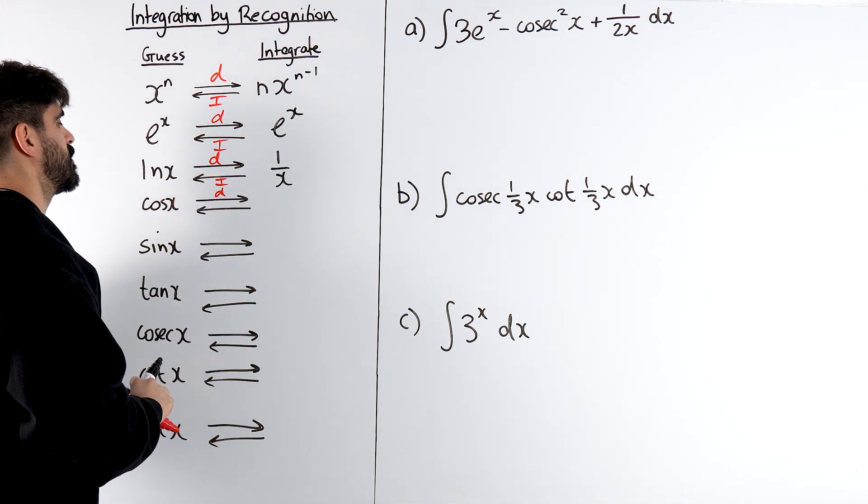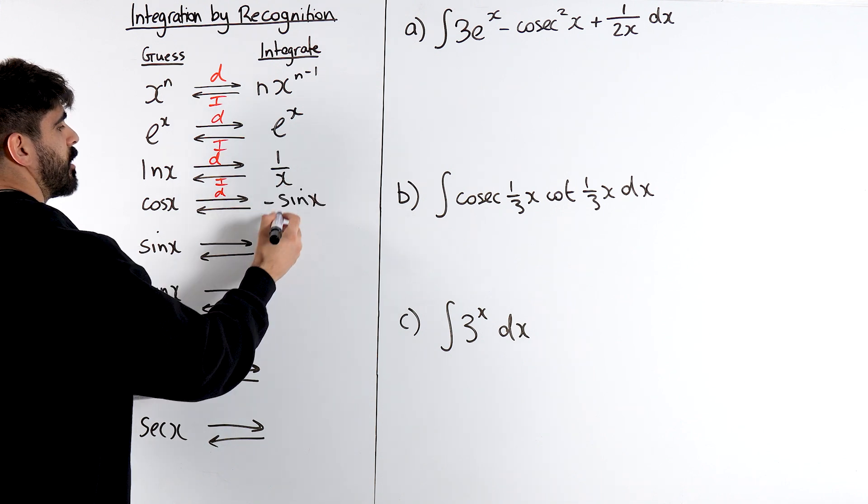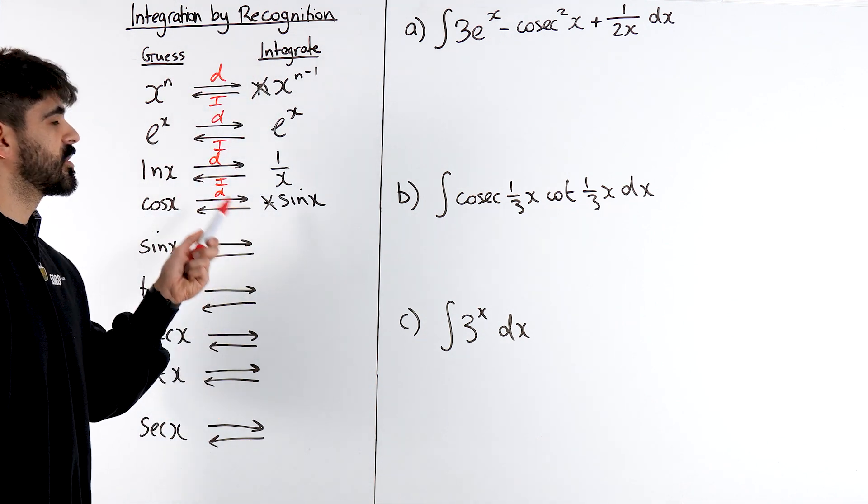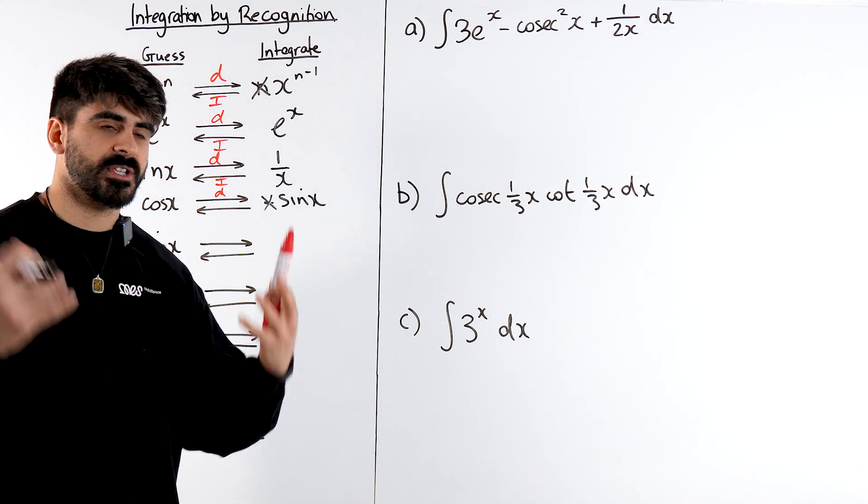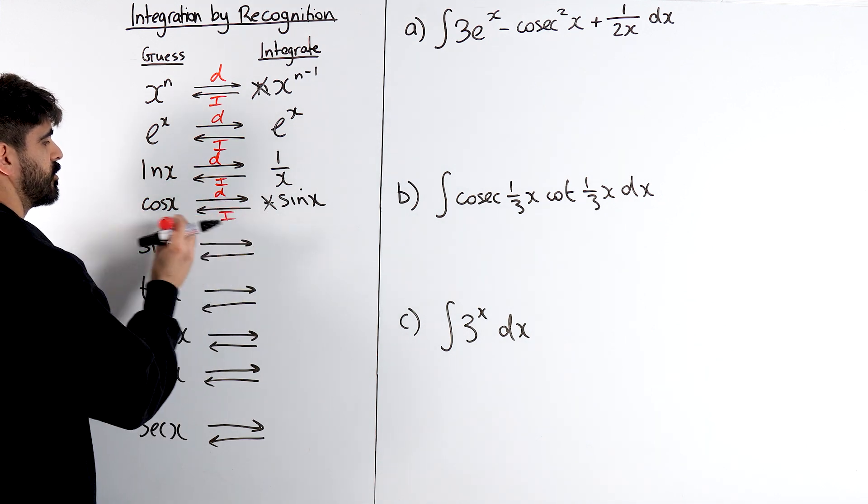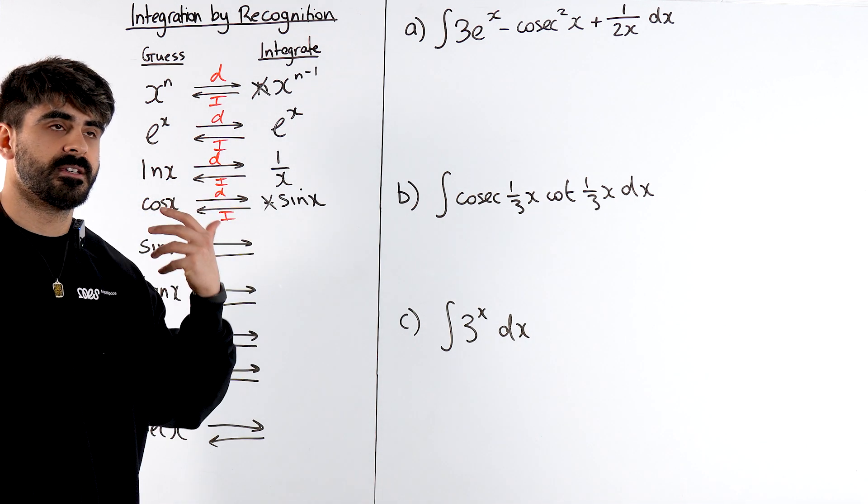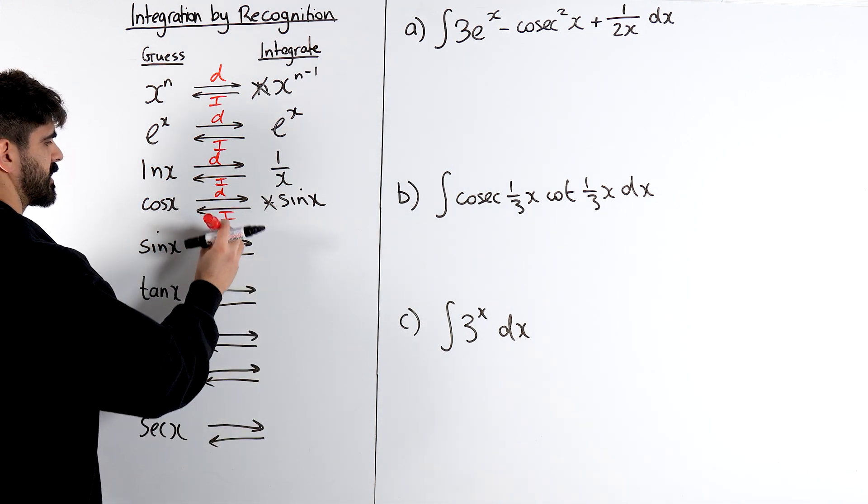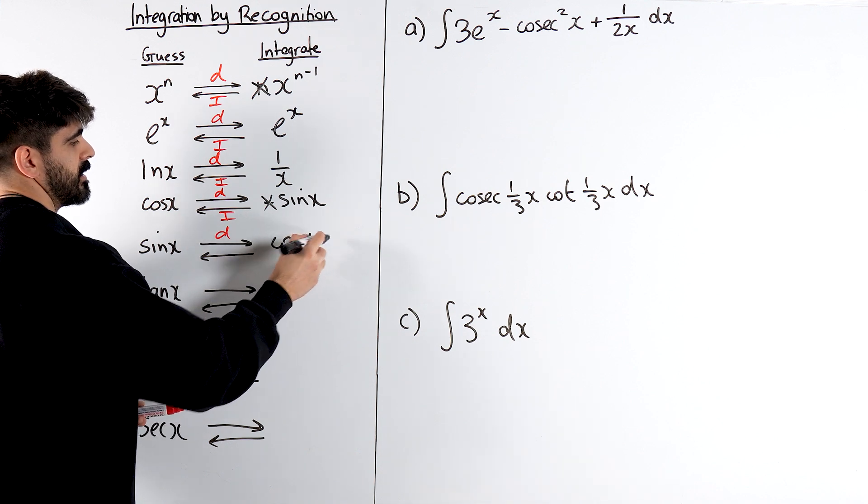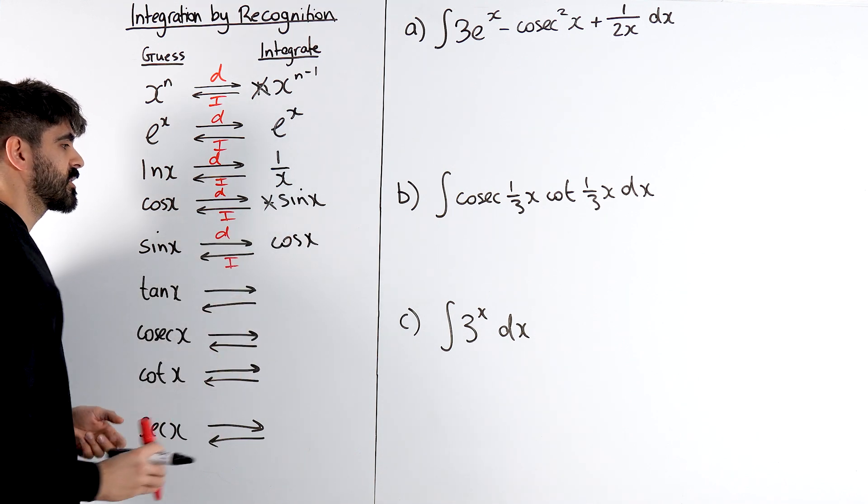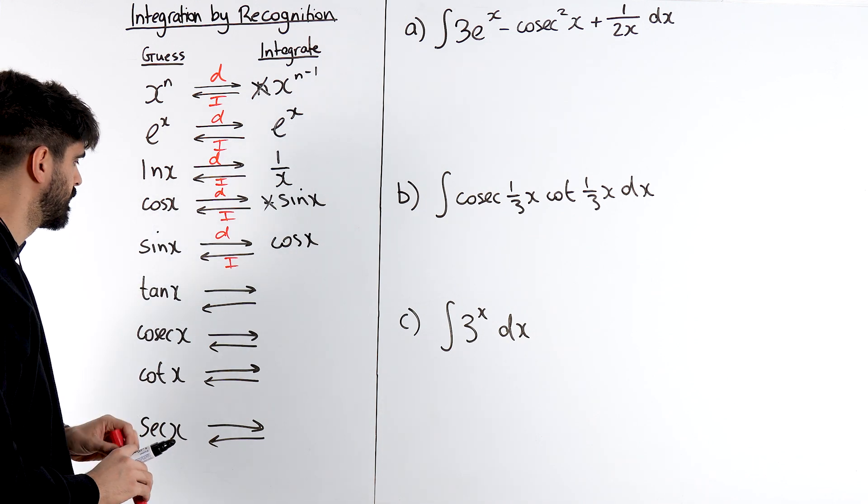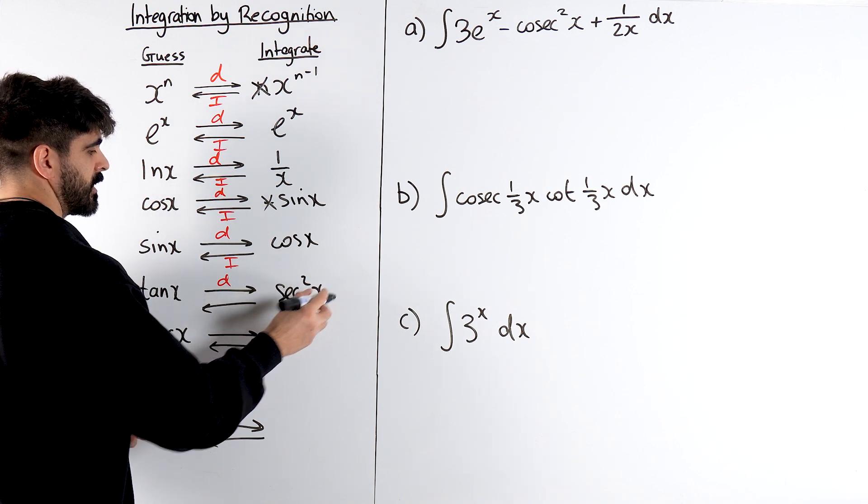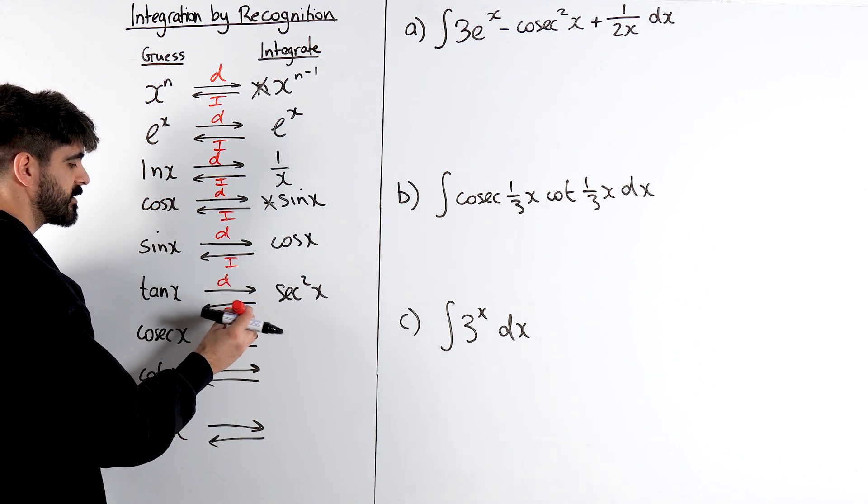Cos x differentiates to minus sin x. We don't worry about these signs or constants. If I see sin x my thought process is that it's going to integrate to a cosine function and then we address the positives, negatives, constants after. Sine differentiates to a cosine function meaning if I want to integrate a cosine function I'm thinking about the function of sin. With tan, if I differentiate tan that's going to give me sec squared. So if I see that I want to integrate sec squared I'm thinking about tan.